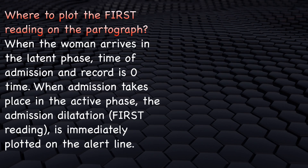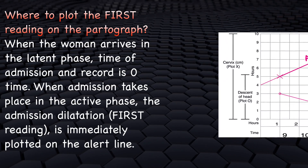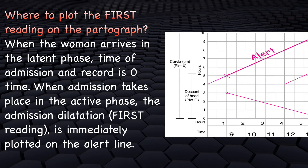It is crucial to plot the first reading in its proper place. This is important because it is not explained in most medical textbooks and therefore health workers do not know this. When the woman arrives in the latent phase, the time of admission is recorded as zero time on the graph. When admission takes place in the active phase, the cervical dilatation — the first reading — is immediately plotted on the alert line.